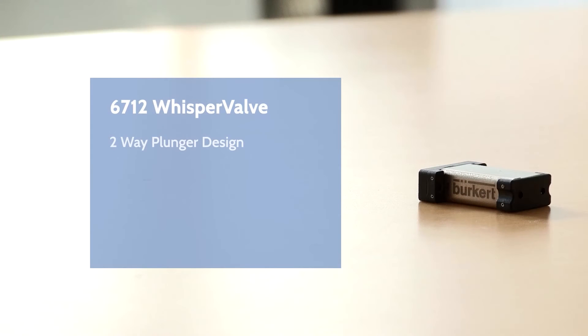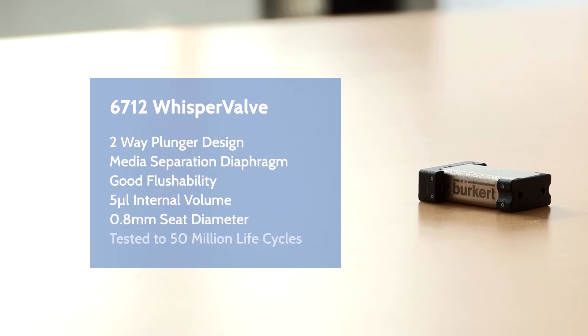The 67th valve is a plunger type with media separation. This design is perfect for good flushability and less internal volume.